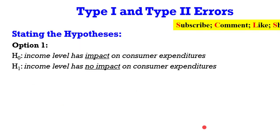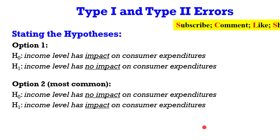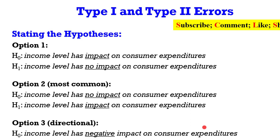I'm going to show you ways by which you can state your hypothesis. For instance, I want to test the relationship between income level and consumer expenditure. Option 1: you can see the null and the alternative stated. Option 2 is the most common way by which people state their hypothesis — look at the differences between option 1 and option 2. Option 3: I can state it in a directional form — income level has a negative impact, against the alternative that income level has a positive impact. But option 2 is the most common, which is a two-sided test.